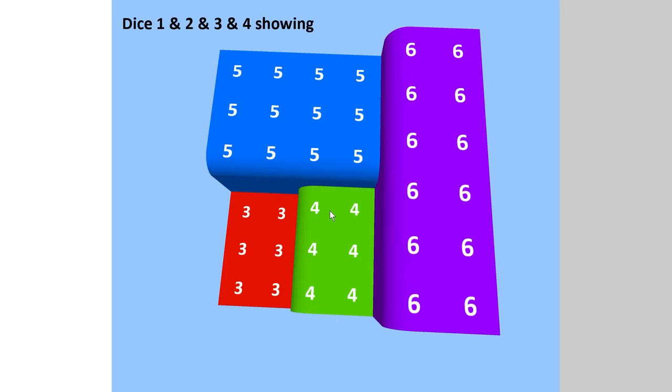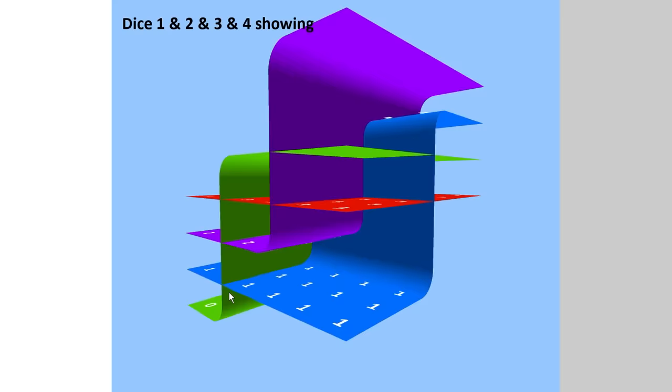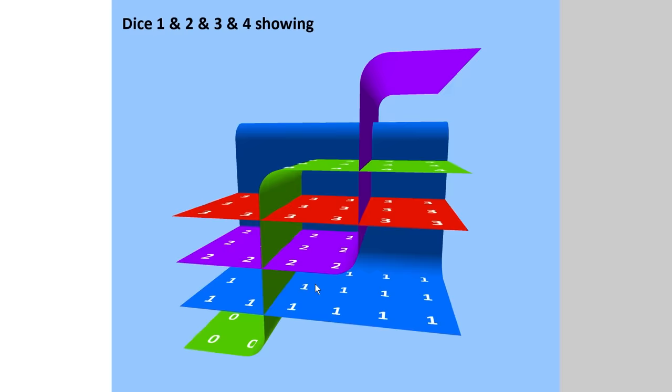Some interesting things to note about this overall shape is that it uses every level from 0 to 6. We have 0, 1, 2, 3, 4, 5, 6. So, you know, making good use of space. But also, this shape is symmetrical.